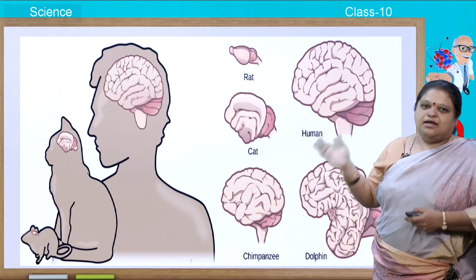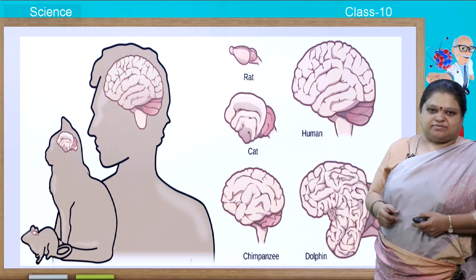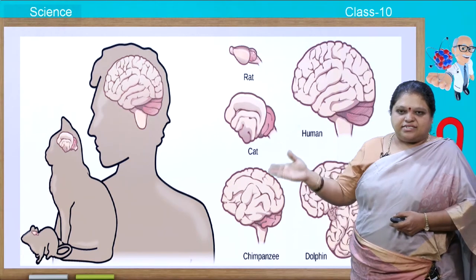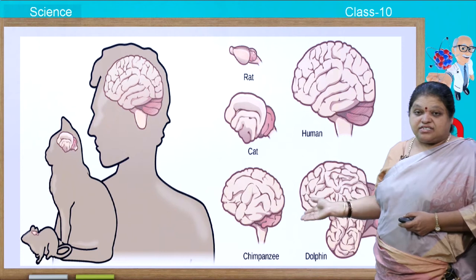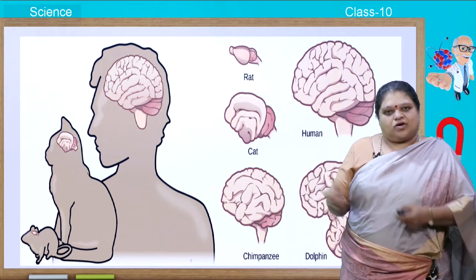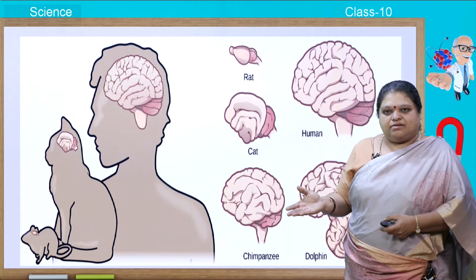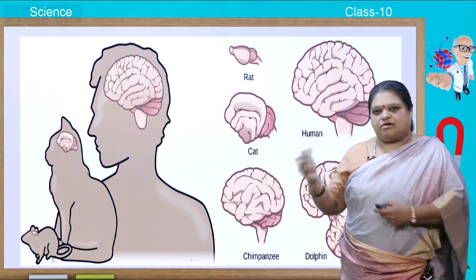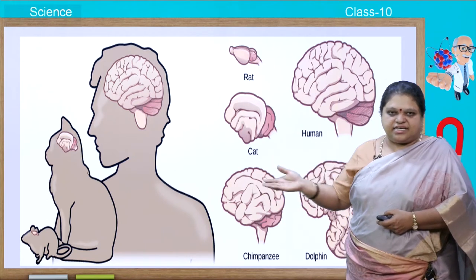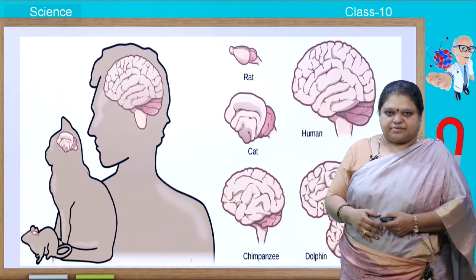You can see the brains of different organisms — first the human brain, then the cat brain, the rat brain. See the size difference. You can also see the dolphin's brain and how huge it is. You can compare the size and also the intellect.